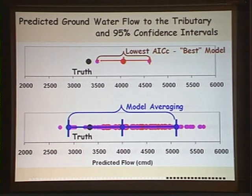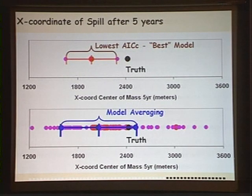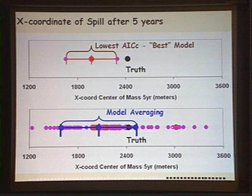What about flow rate to the tributary? We look at the best model and find its confidence intervals don't even include the truth, but when we multi-model average, we do include the truth. Looking at the position of the plume after five years of pumping, again the best model doesn't include the truth, but the multi-model average values do. There's even a model that predicted the plume would be way to the east, but its weight was so small it didn't influence the overall model averaged uncertainty.